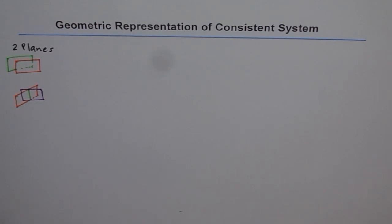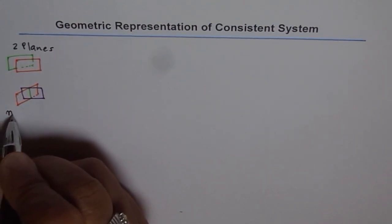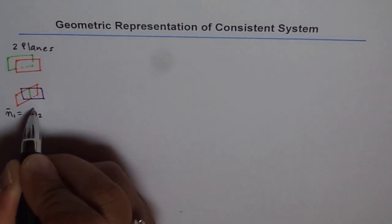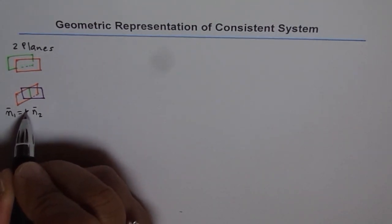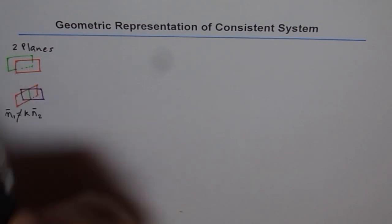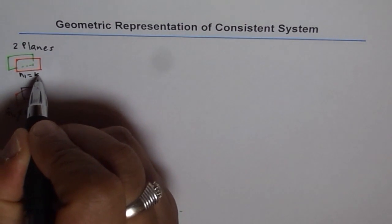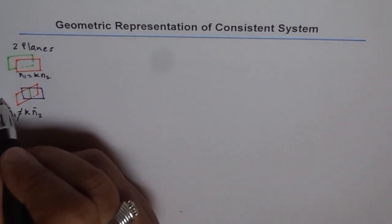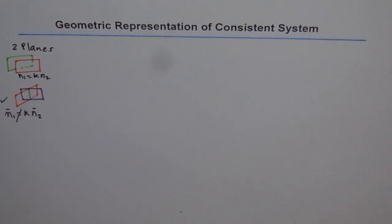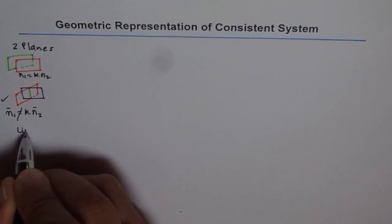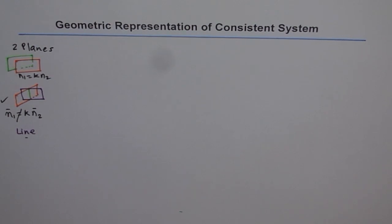The condition which tells you that the two planes will intersect is very simple: if N1 is the normal for one plane and N2 is the normal for the other plane, then they should not be scalar multiples of one another. If they are parallel, that means N1 is a scalar multiple of N2. This system is consistent and the solution is always a line — two planes intersect in a line.